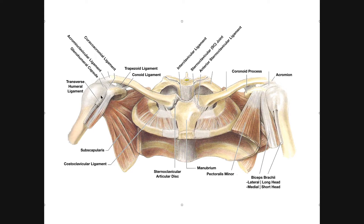Here's the head of the humerus articulating with the glenoid fossa of the scapula. We can see the transverse humeral ligament spanning between the greater tubercle and the lesser tubercle. Underneath it is the tendon of the long head of the biceps brachii, traveling through the intertubercular groove. Adjacent and medially is the tendon of the short head of biceps brachii, which originates on the coracoid process. Also originating on the coracoid process is pectoralis minor, which is the most medial, followed by the short head of biceps, and then the long head of biceps brachii running underneath the transverse humeral ligament.